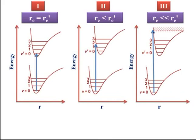The spectrum obtained after these transitions shows that in the first case, the transition probability of 0→0 transition is maximum as compared to 0→1 transition. The 0,0 transition means the transition from vibrational energy level v = 0 of the ground electronic state to vibrational energy level v' = 0 of the excited electronic state. Since population is maximum at v = 0, the spectral line for 0→0 transition has greater height compared to 0→1 or 0→2 transitions.